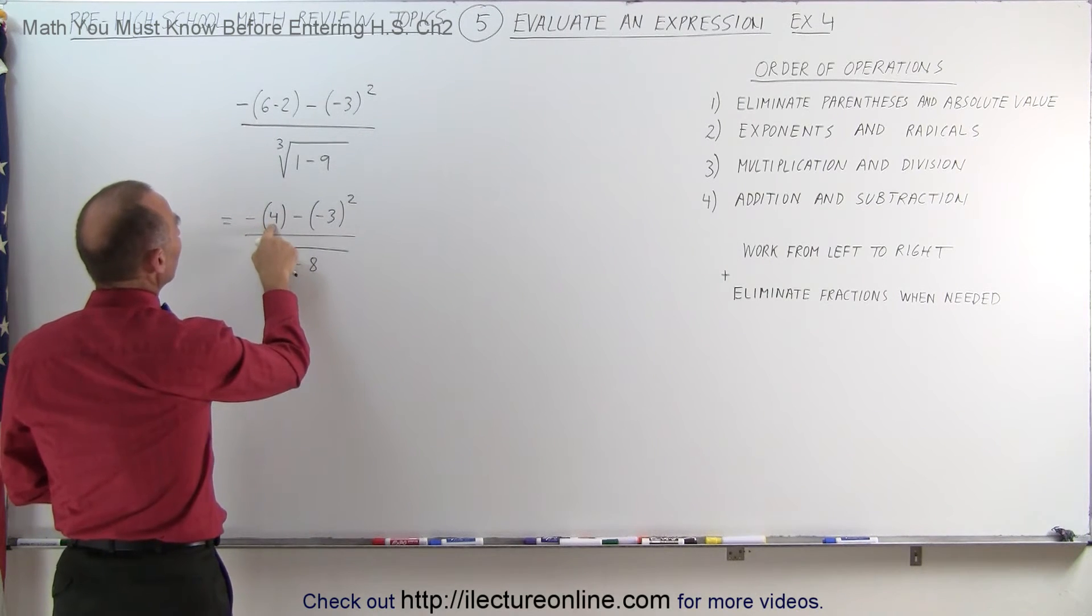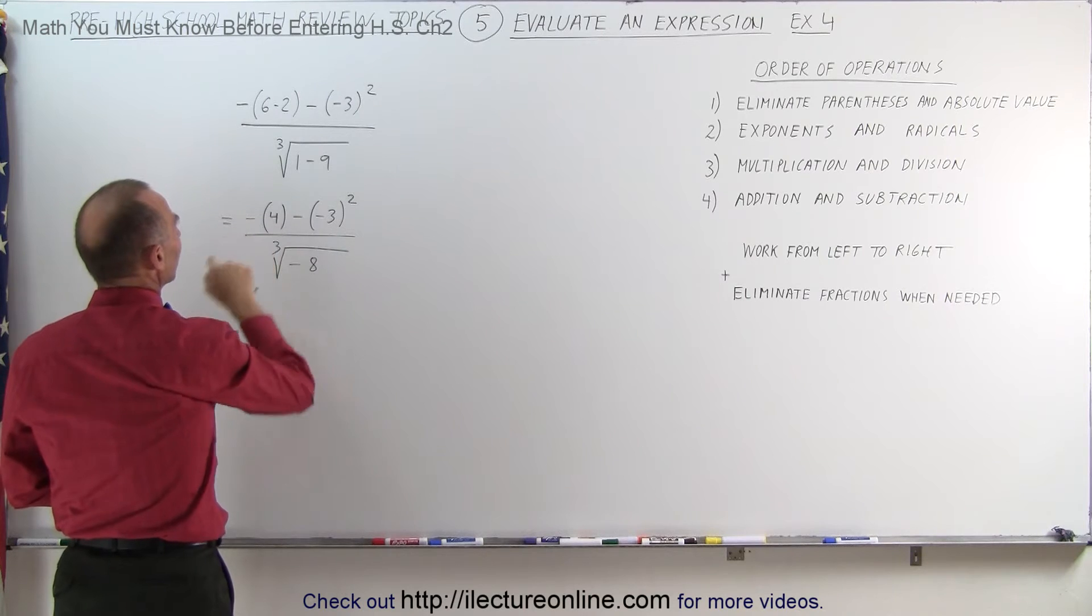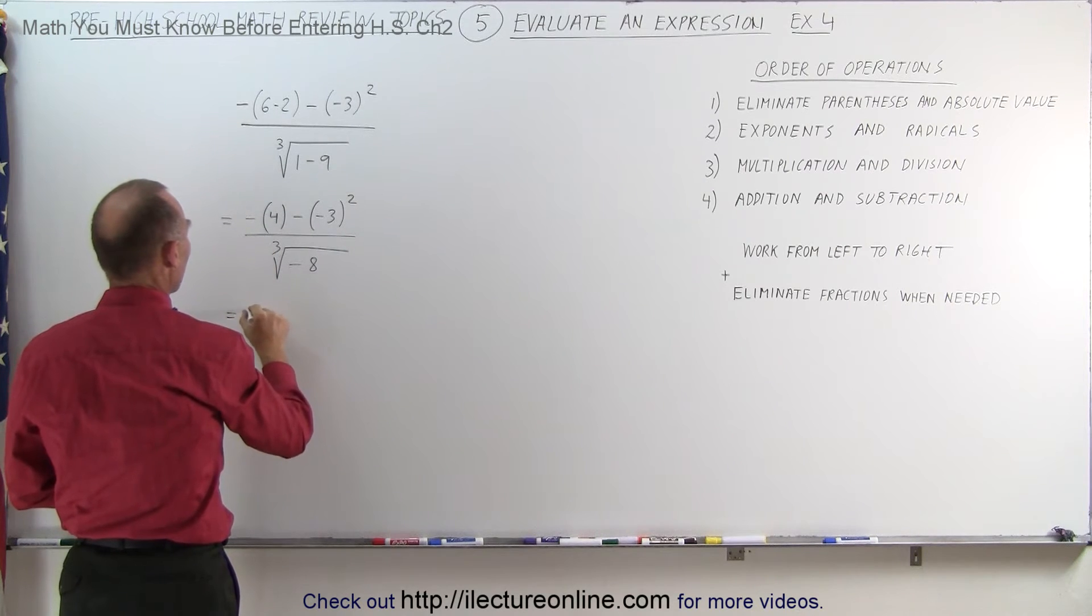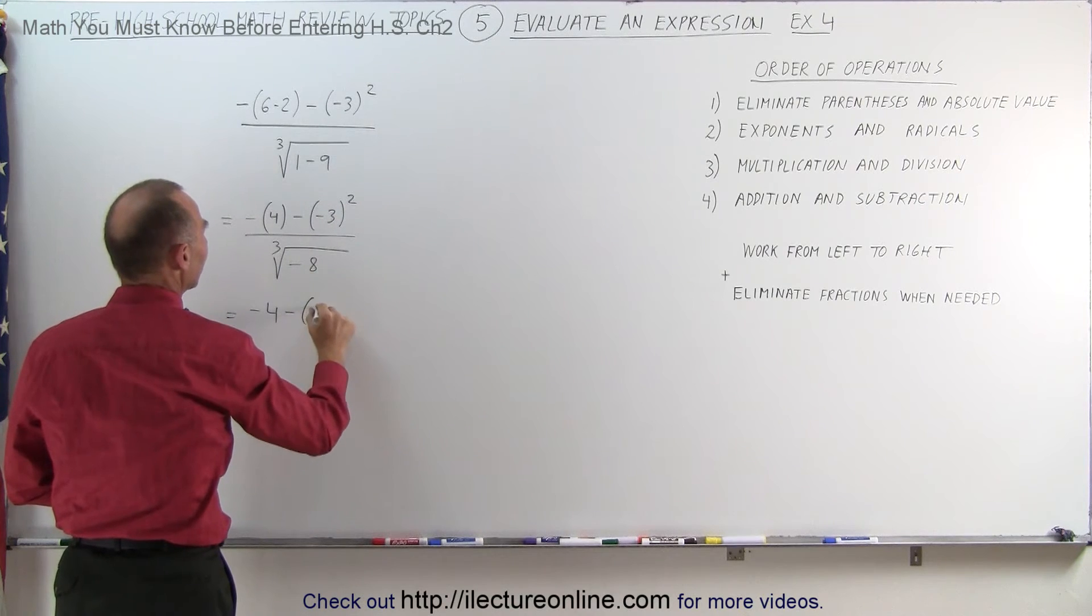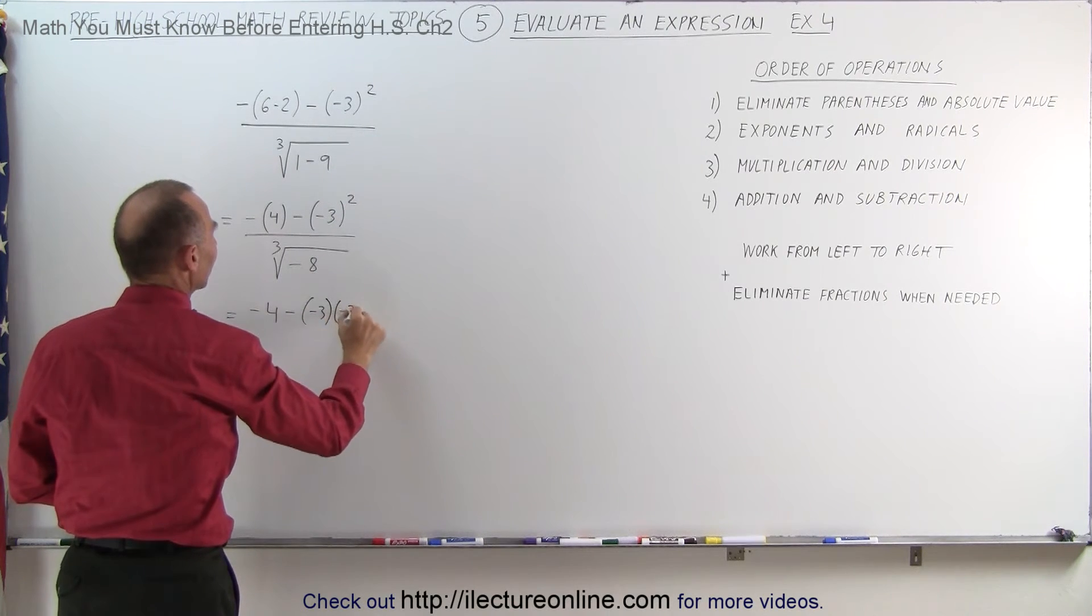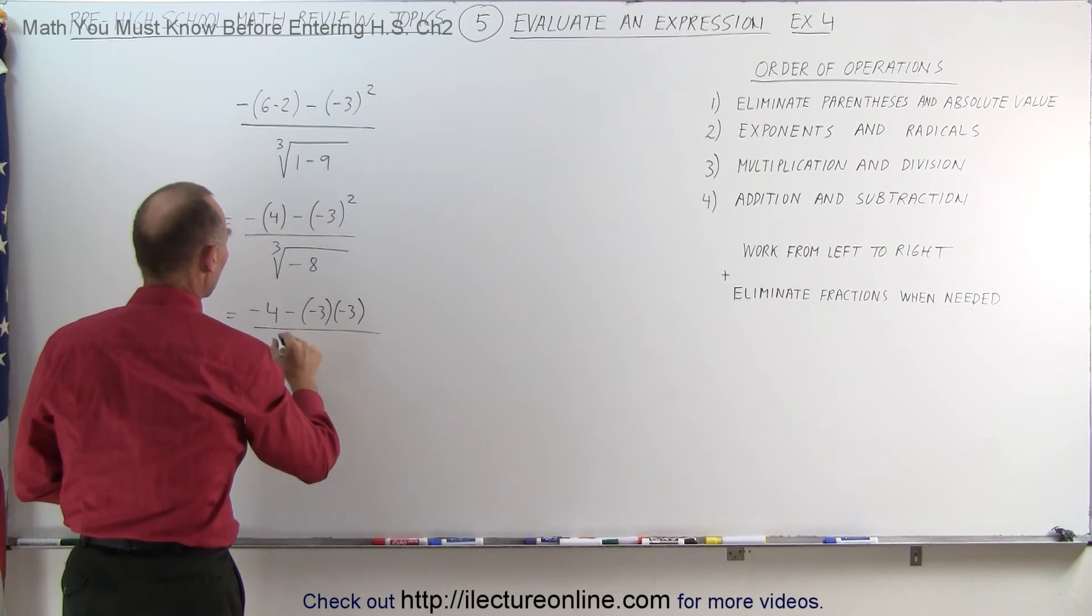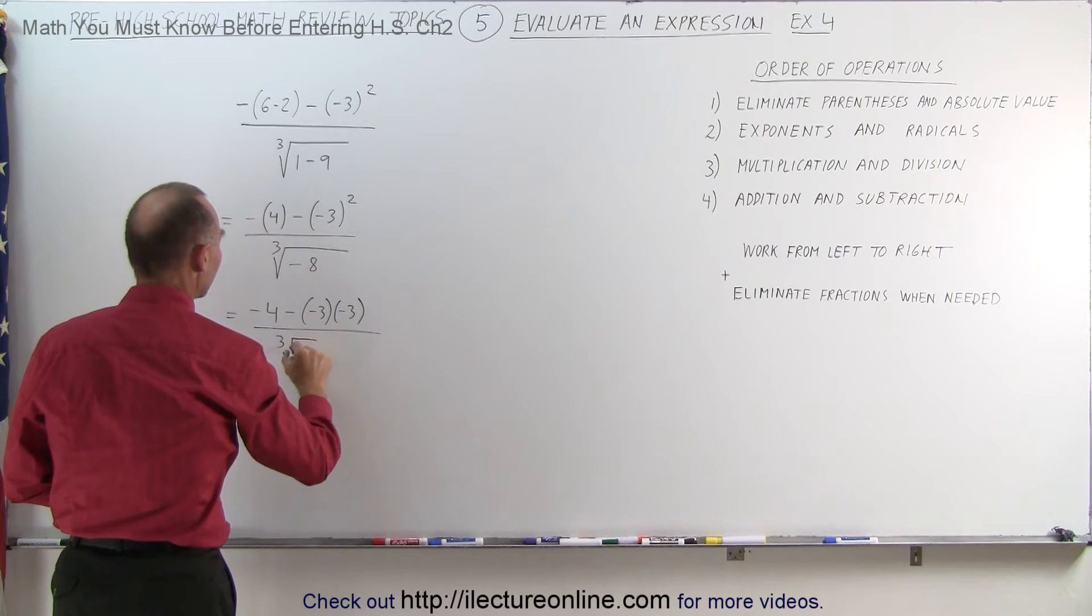Now we can get rid of these parentheses by simply putting the negative in front of the 4. So this is equal to minus 4 minus negative 3 squared, which is negative 3 times negative 3, divided by the cube root of negative 8.